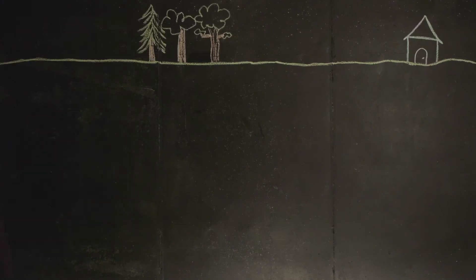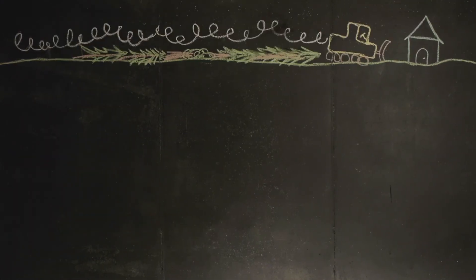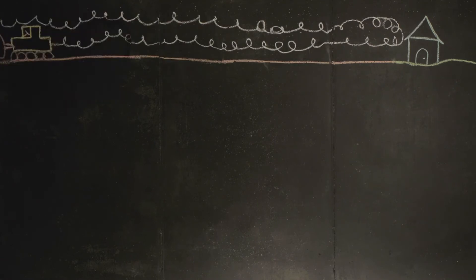Fracking begins with a lease to drill. Then land is cleared for a well pad where the extraction and production will take place.